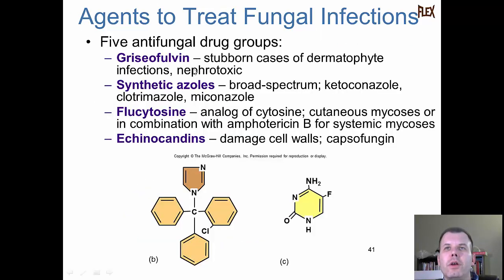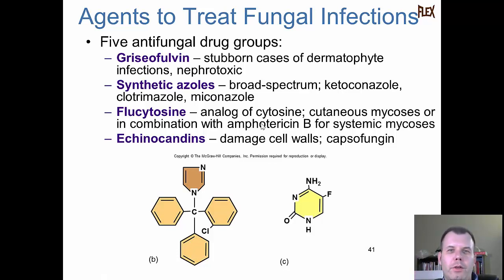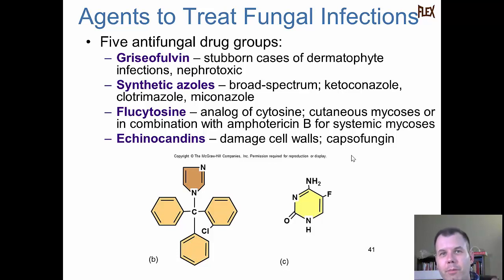Another antifungal type is griseofulvin for dermatophytes - like the yellow nail fungus that lives under your nail bed. If the normal topical doesn't work, you sometimes have to take a pill because the infection is internal. There are also synthetic azoles, flucytosine - an analog of cytosine that works against cutaneous mycosis - and echinocandins which damage cell walls. So typically we're looking at targeting either cell membranes or cell walls of the fungus, because fungal cells have walls we don't have.